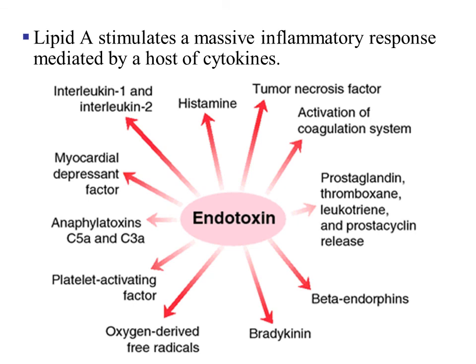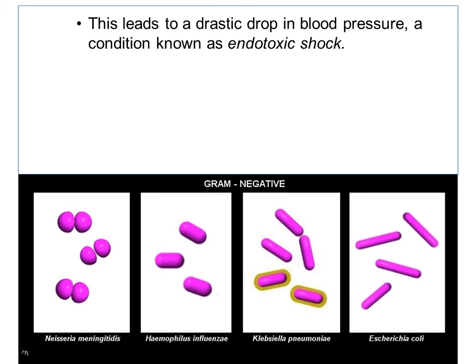This lipid A is called the endotoxin. It is going to stimulate a massive inflammatory response mediated by chemical messengers called cytokines. This gram negative infection that has been destroyed, now releasing the endotoxin, is going to lead to a drastic drop in blood pressure — a condition known as endotoxin shock, because the endotoxin is interacting with the immune system.